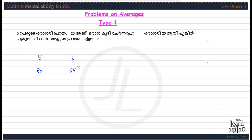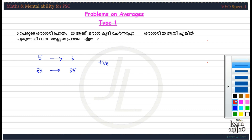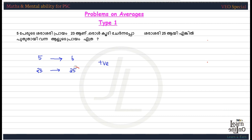What is the positive change average and negative change average? When we do a number, the average is 5, 6, then 23, 25. Then, what is the positive change average? What is the negative change? We will start to know the number in the bottom corner. That is 25. We will get to know the difference between 25 and 6.